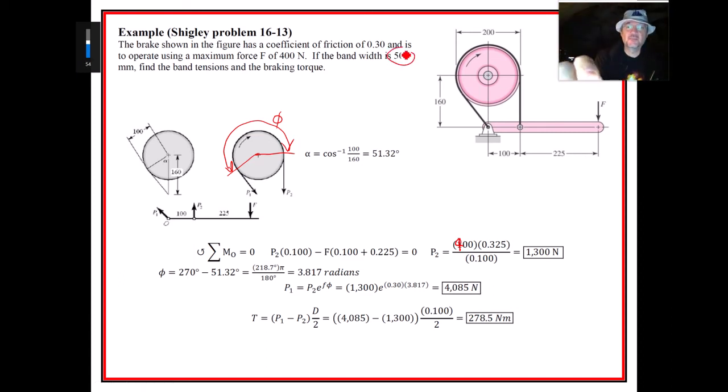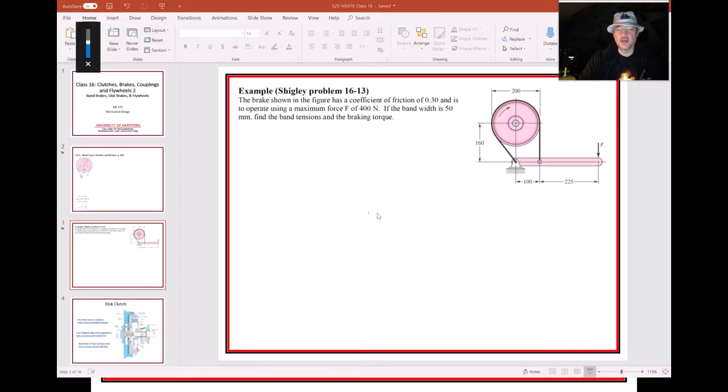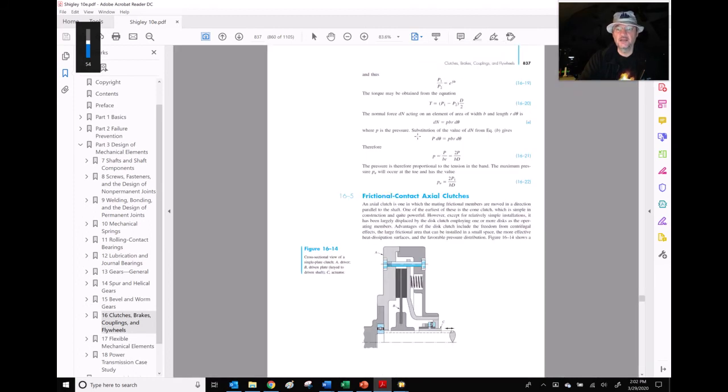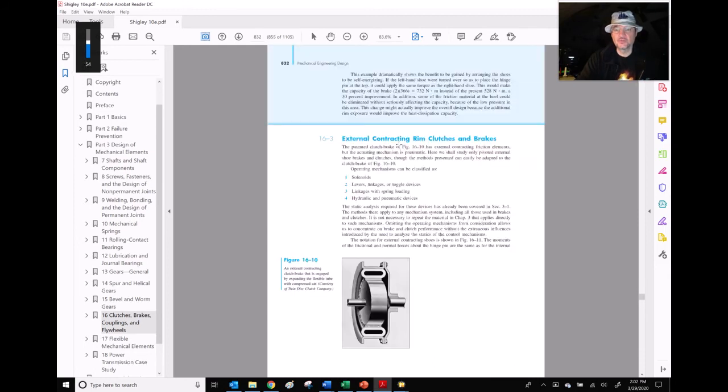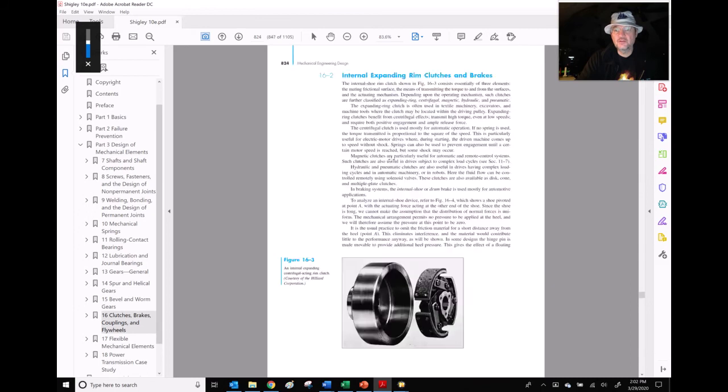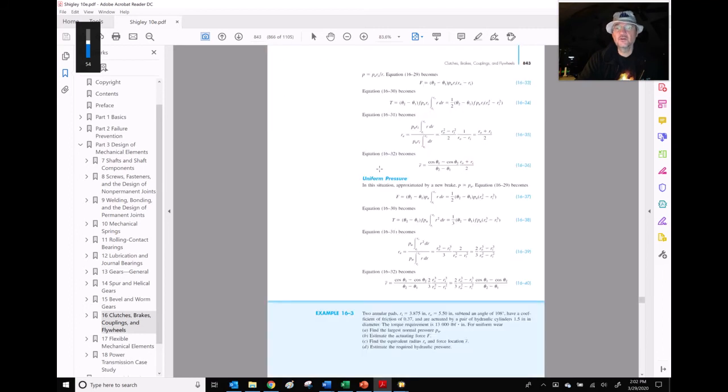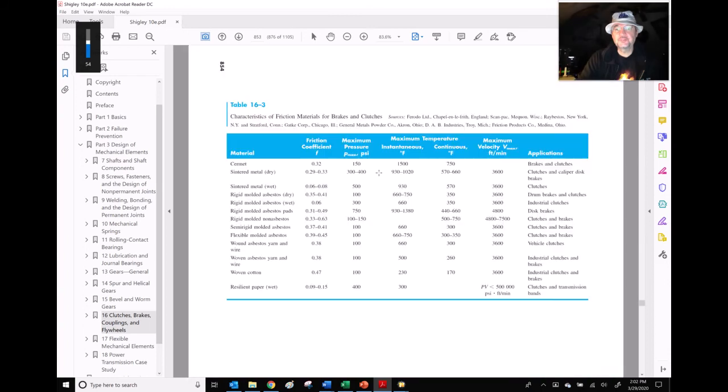Notice we didn't need the bandwidth. One thing we could do to modify this problem is tell you it's a particular material, and therefore we would have to look up in Shigley the maximum pressure. We could ask what's the maximum braking capacity for this configuration. If we go to the material section of this chapter, we can find out what the maximum pressure is going to be.